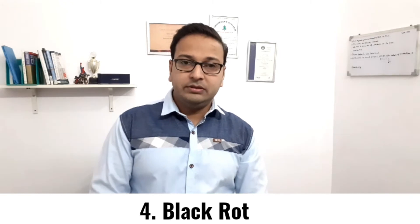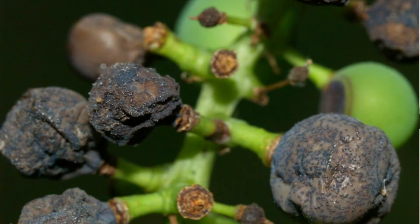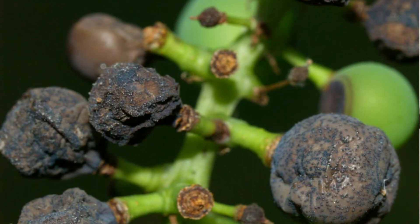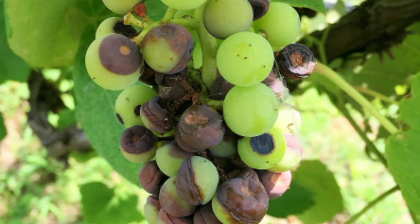Number four is Black Rot, Guignardia bidwellii. It is a fungal disease also very common in the US. The fungus develops over winter and in spring infects new vines during wet, warm weather. The grape leaves get black spots, then later they rot, shrivel, and drop.